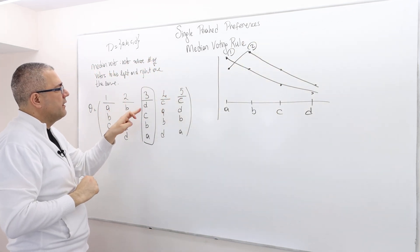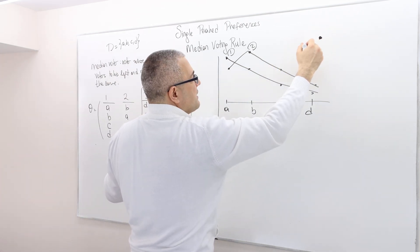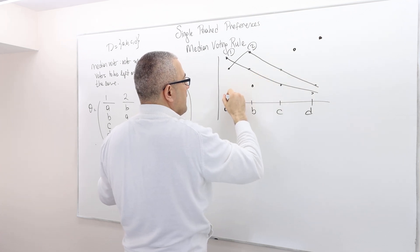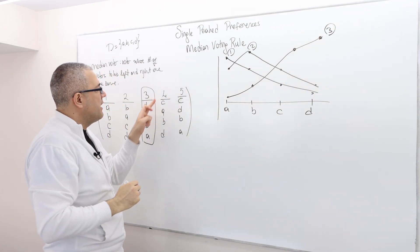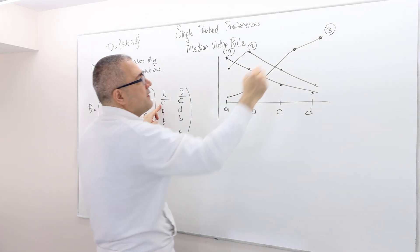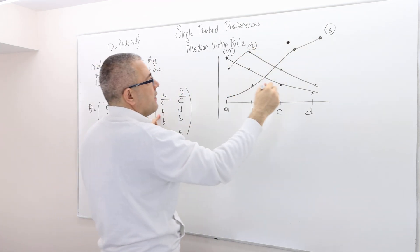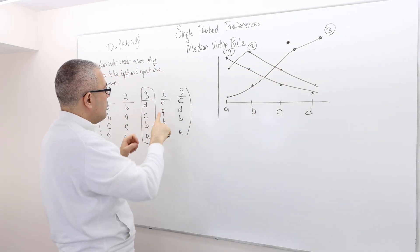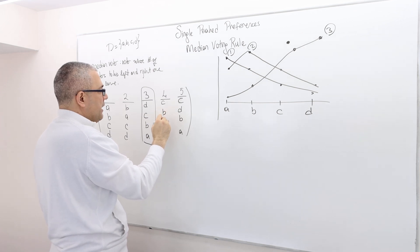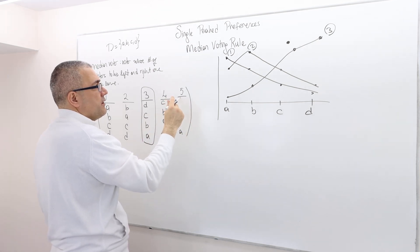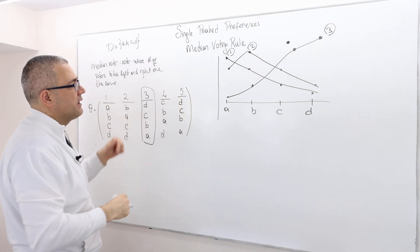Agent three's peak is D — so D, then C, then B, then A — so his utility function is something like this. Agent four's top is C, and then B, then A. And agent five has D, C, B, A — so D top, C second, then B, then A — and his utility function is something like this.